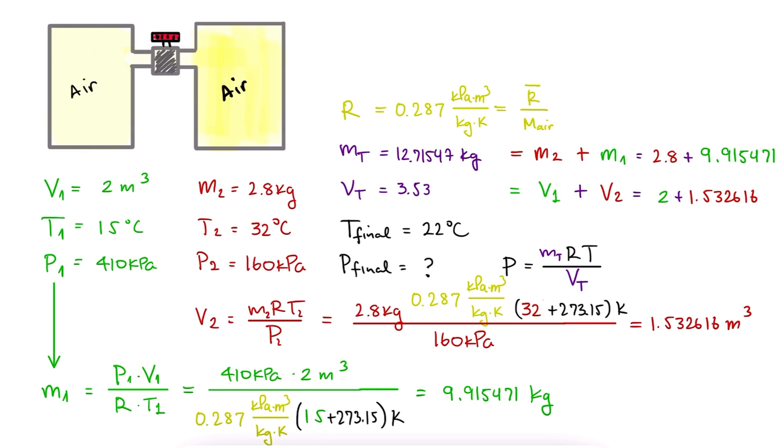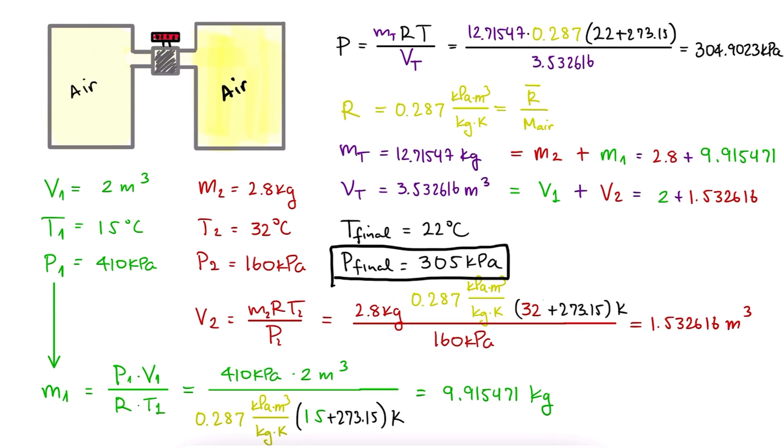With the total mass and the total volume, we substitute the values in our original ideal gas equation, the one for the entire system after the valve is open, to find that the equilibrium pressure is roughly 305 kilopascals.